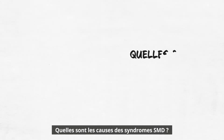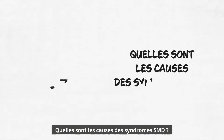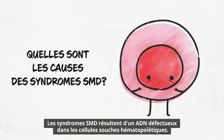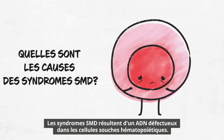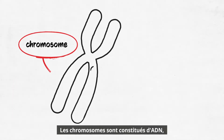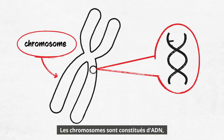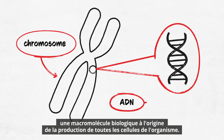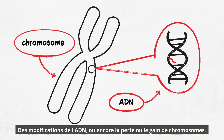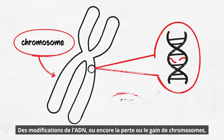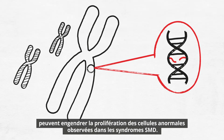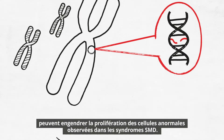Why does MDS happen? MDS is a result of faulty DNA in blood stem cells. Chromosomes contain DNA, the blueprint for making all cells in the body. Changes in the DNA, or loss or gain of chromosomes, can cause the abnormal cells seen in MDS.